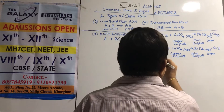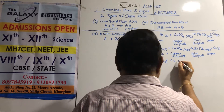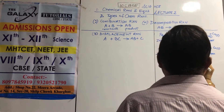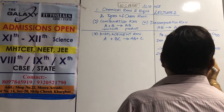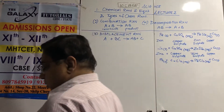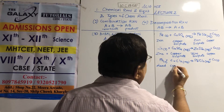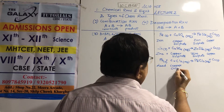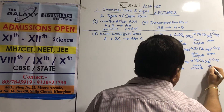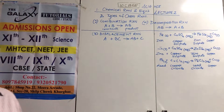Third example: lead solid plus copper chloride aqueous gives lead chloride aqueous plus copper solid. Solid copper comes out again — lead displaces copper from its solution.